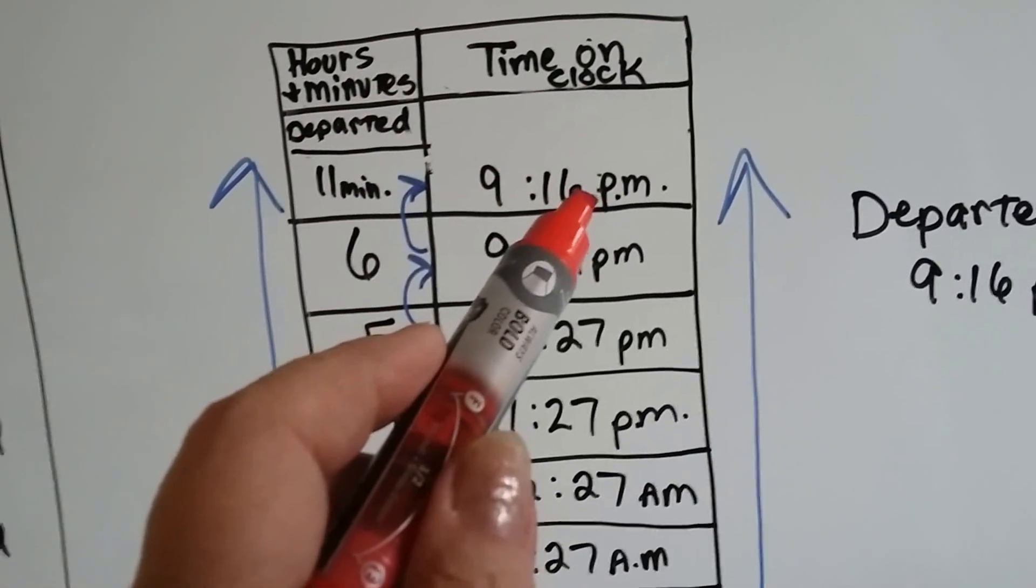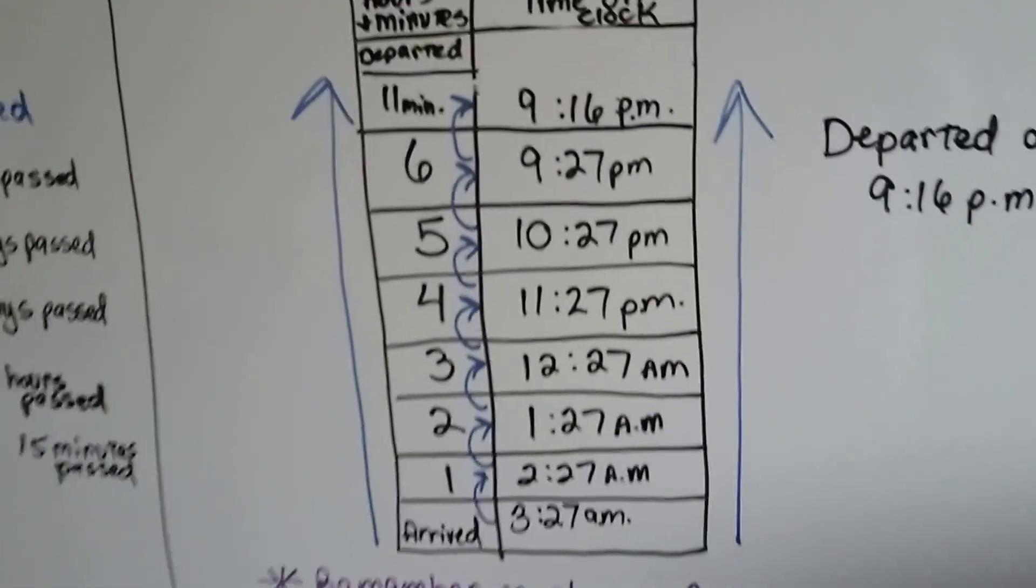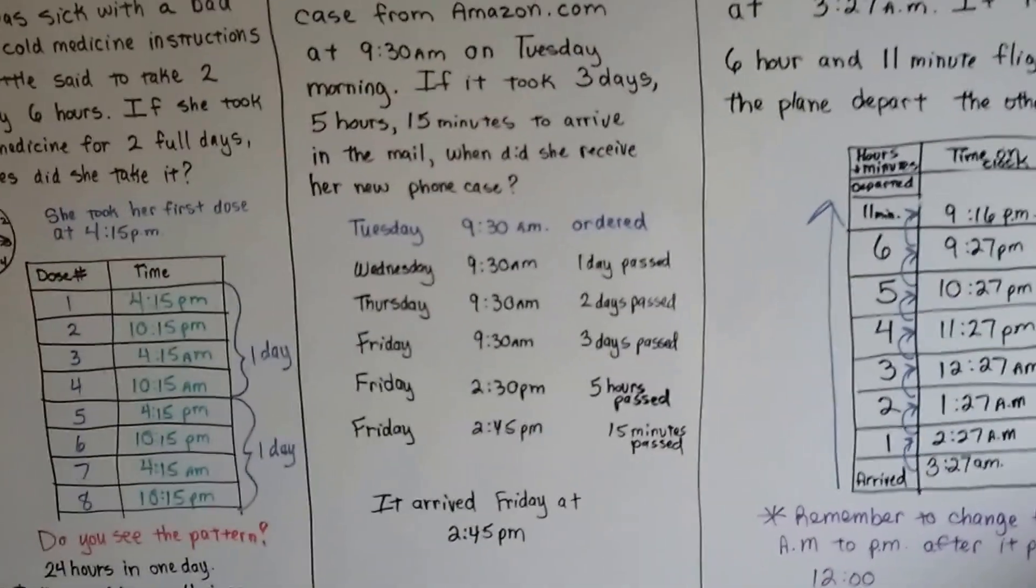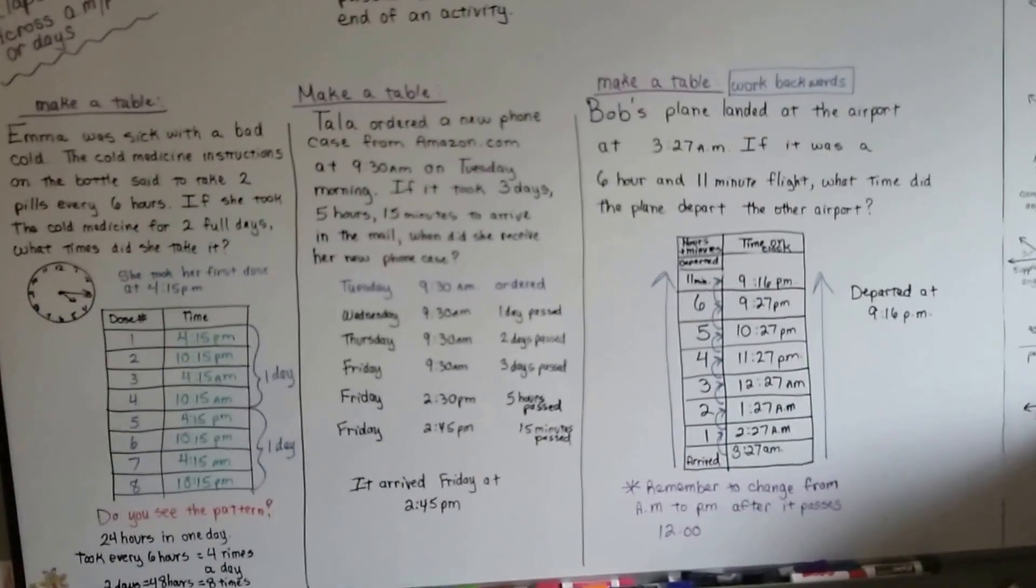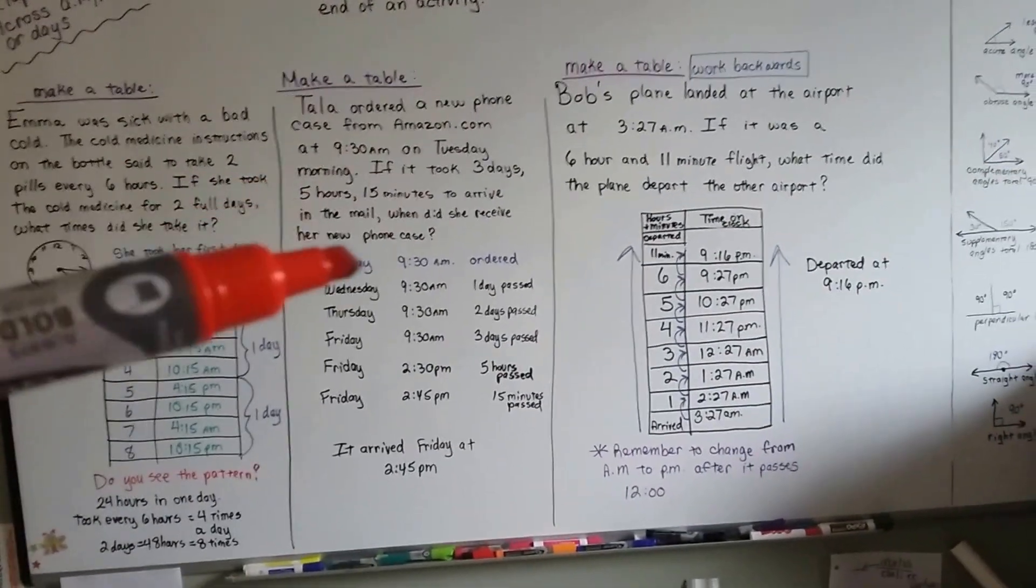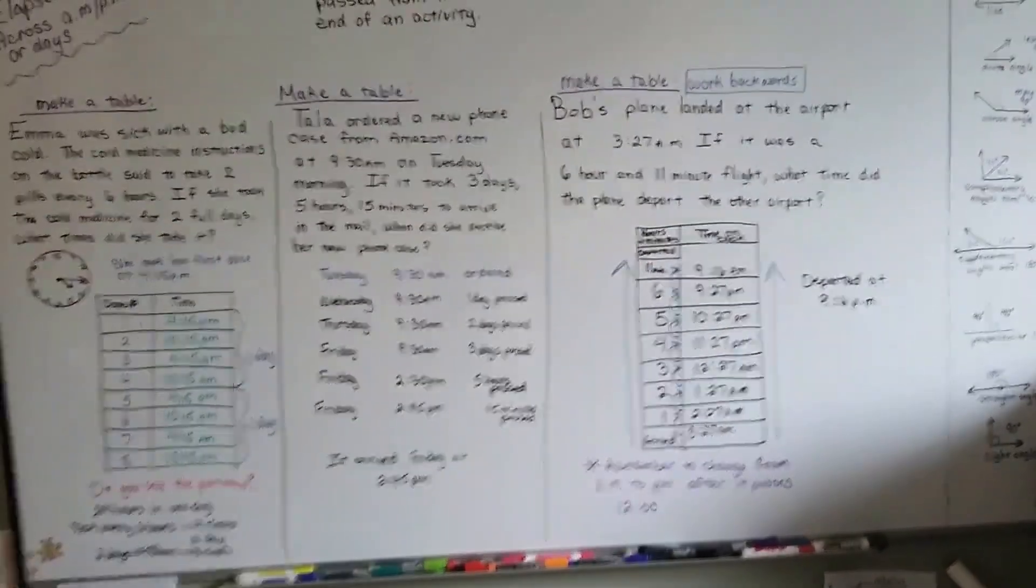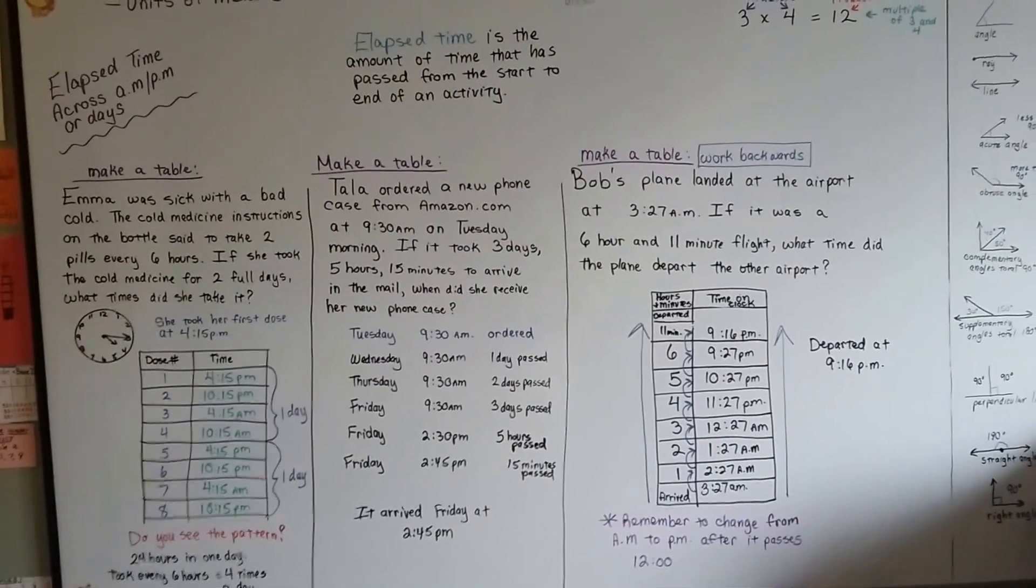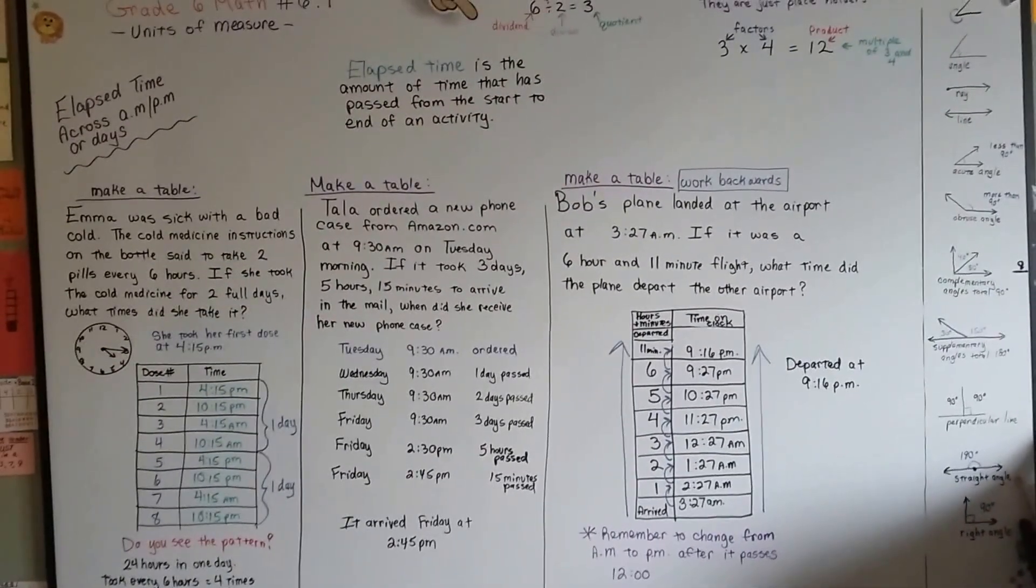So if you have a very difficult elapsed time problem to figure out, get some scratch paper, make yourself a table. And if you have to draw every single hour on it, then do that. That's fine. That'll help you count back. No big deal. You can do this. I know you can. Keep up the good work, and I'll see you next video. Bye.